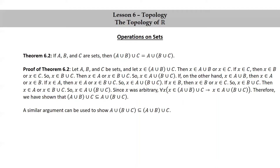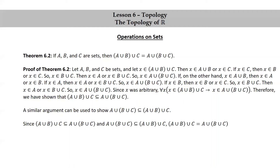Now a similar argument can be used to show the other direction, the other subset. I'm not going to go through all the details — you may want to write those out yourself for practice, but it's very similar to what we just did. Since the left-hand side is a subset of the right-hand side, and the right-hand side is a subset of the left-hand side, by the axiom of extensionality, we get that the two sets are equal. Therefore, the operation of forming unions is an associative operation, as we were trying to prove.